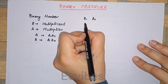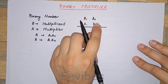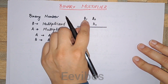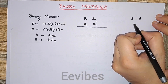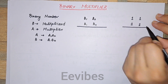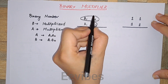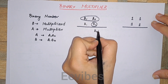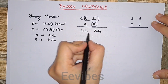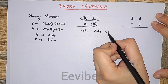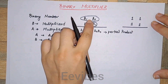B is the multiplicand and A is the multiplier. We take each bit of the multiplier and multiply it with each bit of the multiplicand. For example, taking maximum values for A and B: first we take a0 and multiply it with each bit of B, giving us a0·b0 and a0·b1. The first product obtained is known as the partial product.